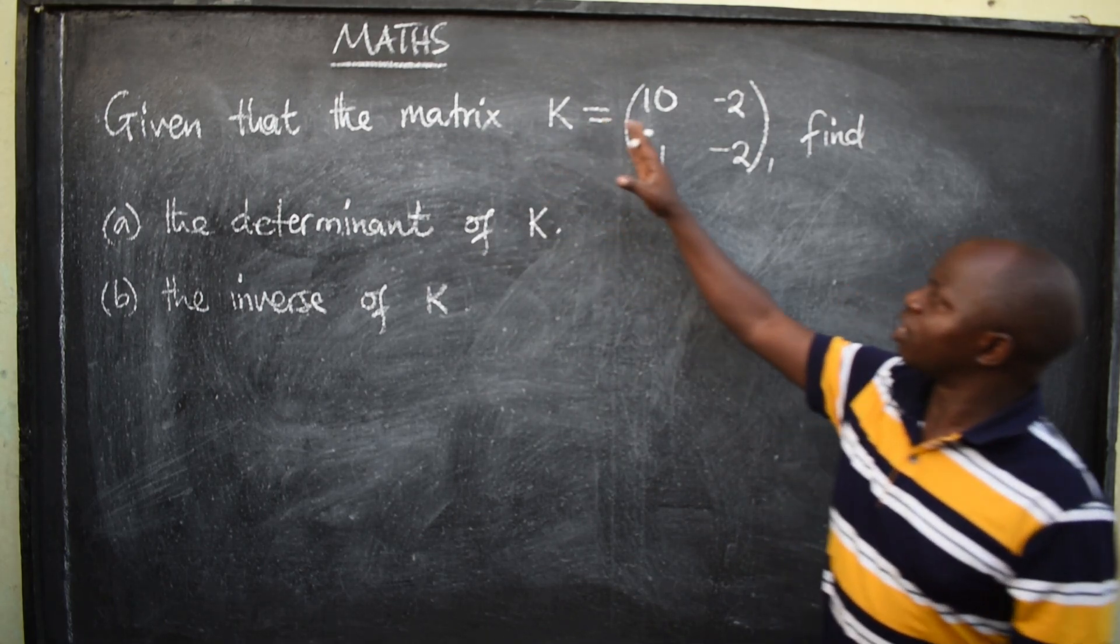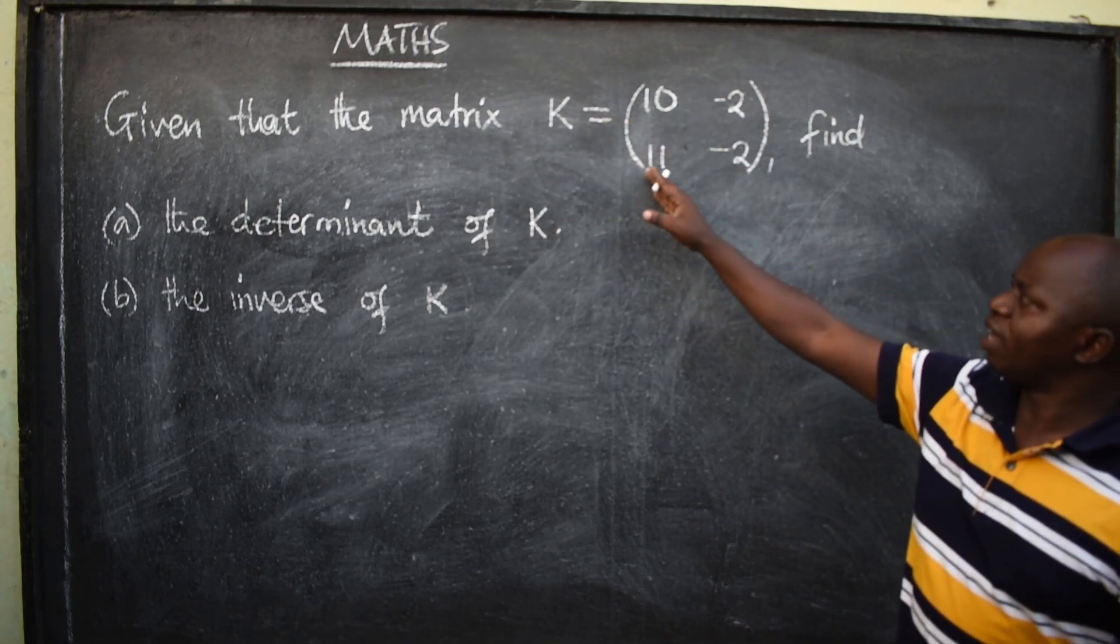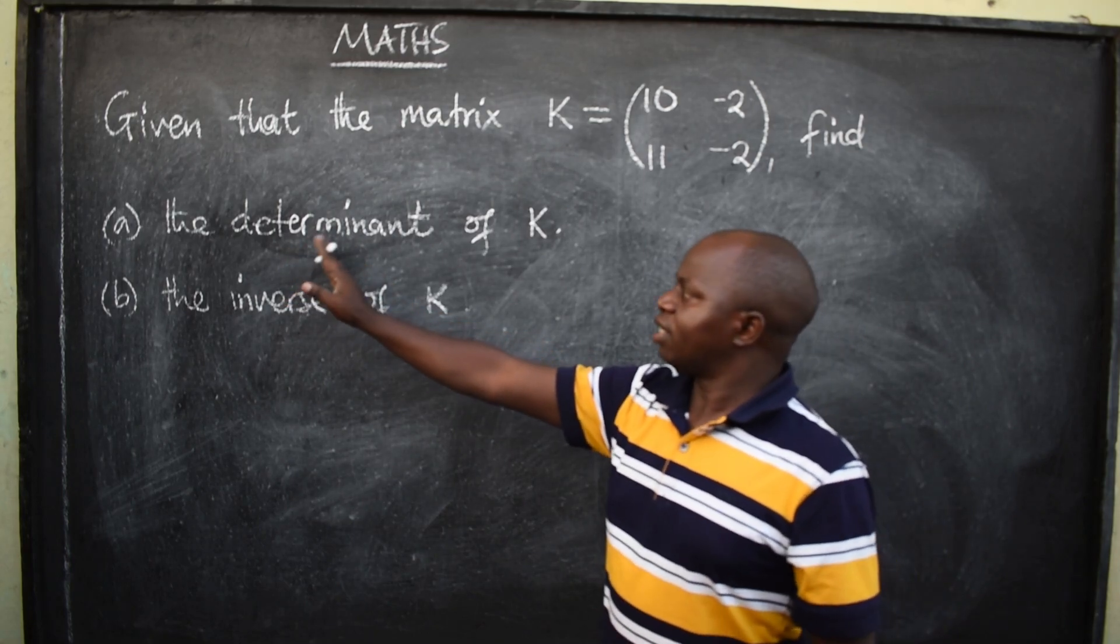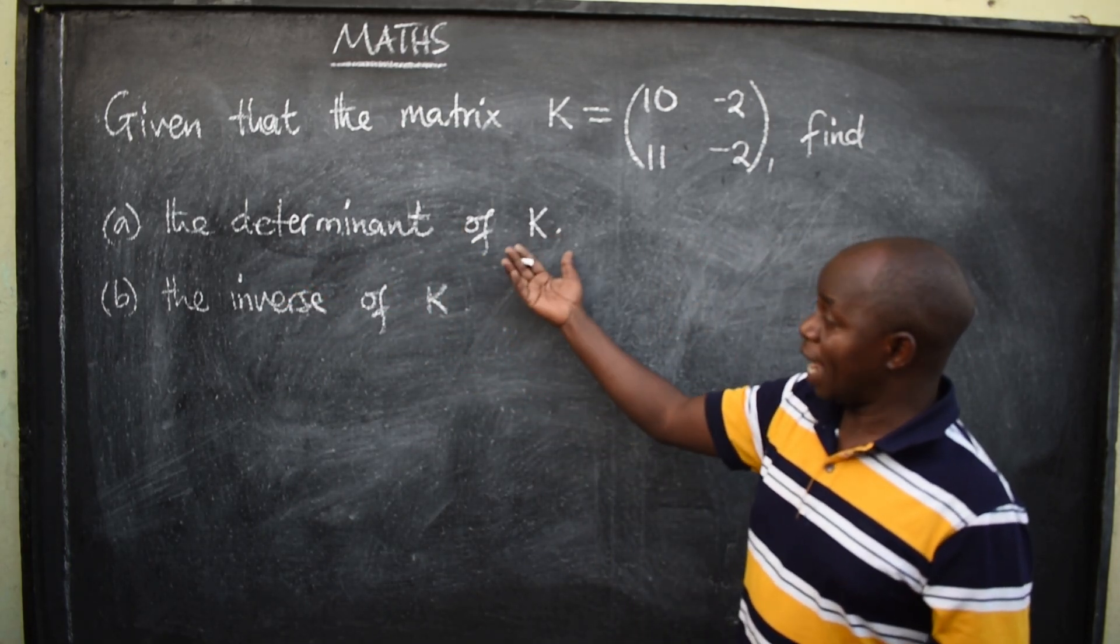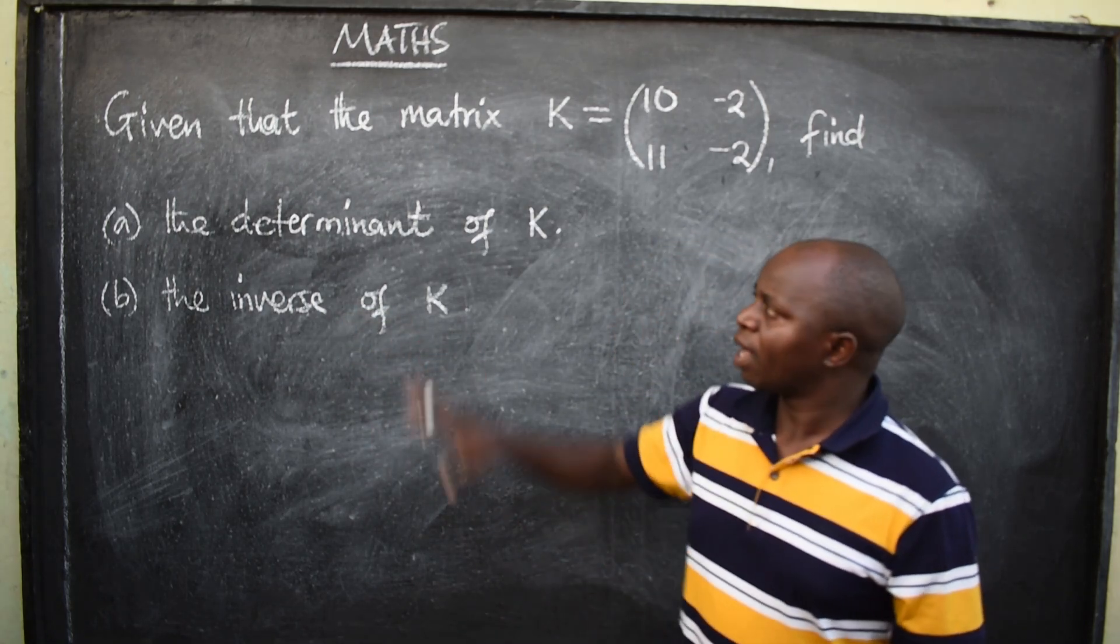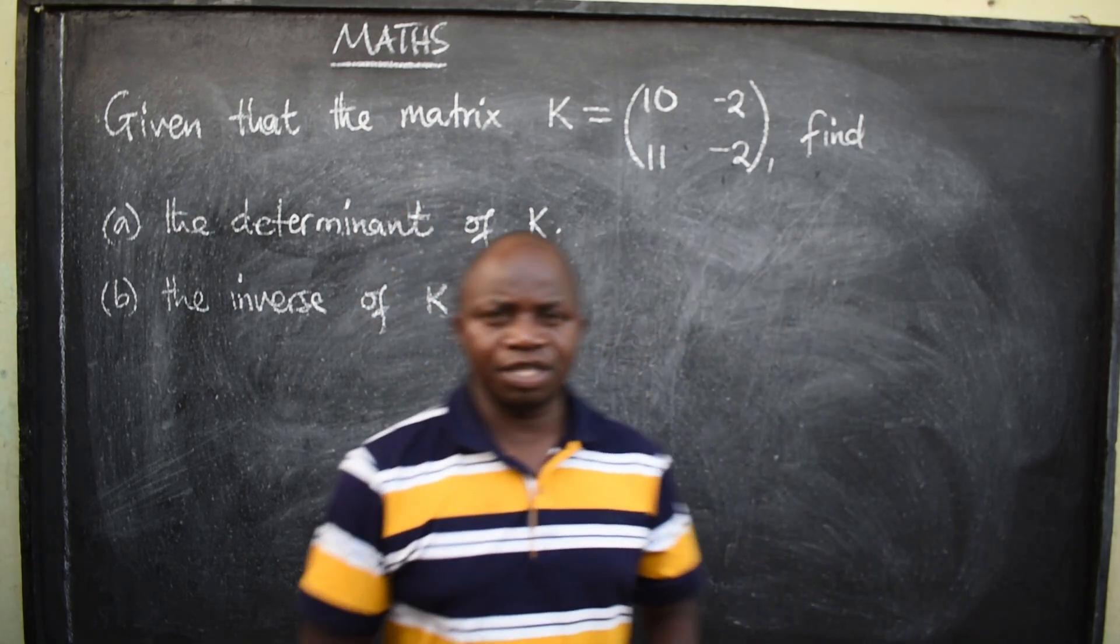Given that the matrix K is equal to 10, negative 2, 11, negative 2, find part A, the determinant of K, then B, the inverse of K. The question is from matrices.